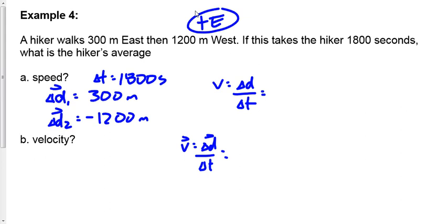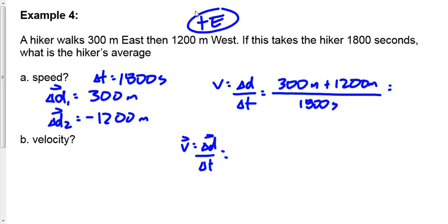For speed, what's the distance? The hiker went 300 meters then 1200 meters, so distance is 1500 meters. Speed equals 300 + 1200 = 1500 meters divided by 1800 seconds, which equals 0.833 meters per second.